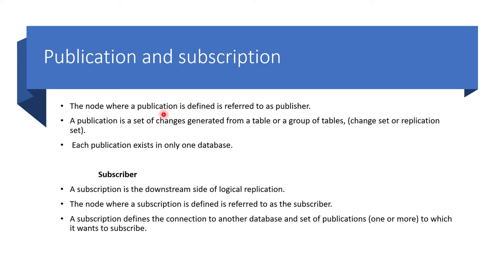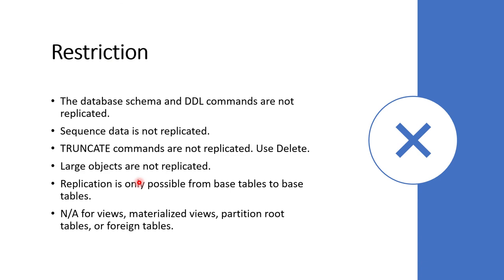A little more about publication and subscription: the publisher node is where the application connects and changes happen, and from the publication node the changes go to the subscriber, which accepts those changes downstream. There are some restrictions: any DDL changes happening on the publisher will not be replicated to the subscriber. In that case, whatever DDLs run on the publisher have to be manually applied on the subscriber, or using pg_dump structure only you can move those commands to the subscriber.